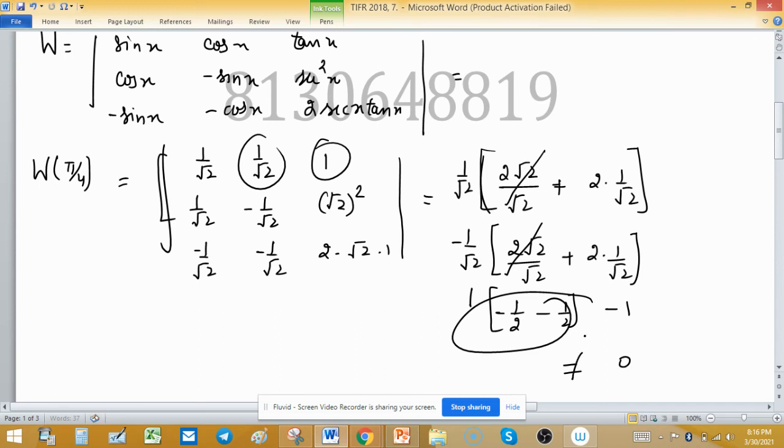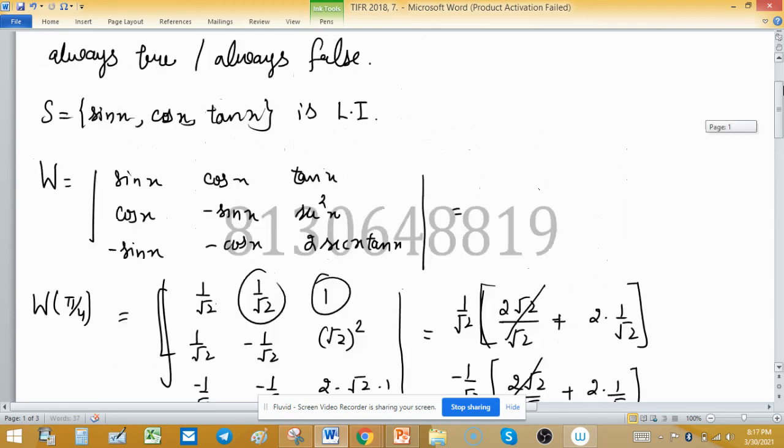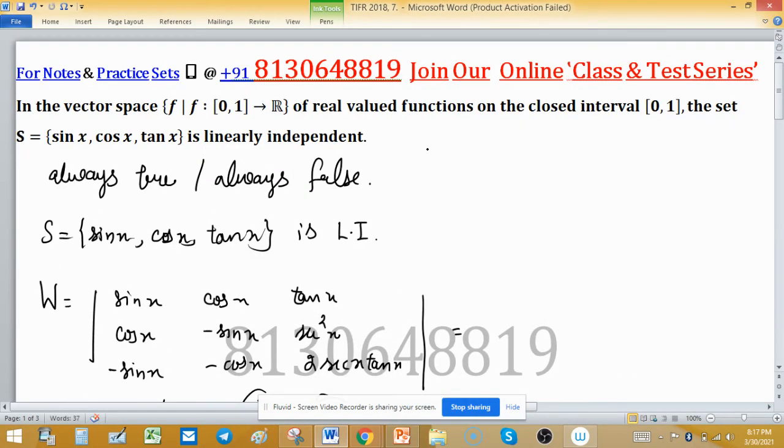So it is non-zero. The Wronskian at π/4 is non-zero, which means this set is linearly independent. Since the statement is true for this value, it is always true. Therefore, this is a true statement.